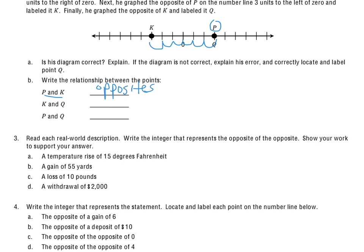Now if I look at K and Q. Here's K. Here's Q. And it's actually the same thing. So K is 1, 2, 3 away. And Q is 1, 2, 3 away on opposite sides. So that's going to make them opposites as well.